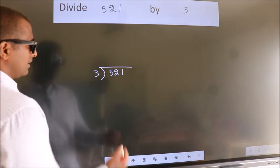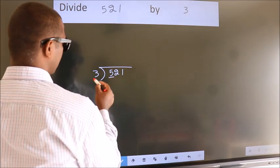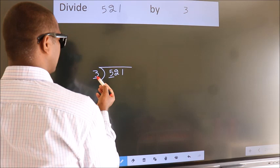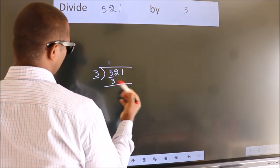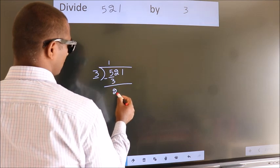Next, here we have 5, here 3. A number close to 5 in the 3 table is 3 times 1 equals 3. Now, we should subtract. We get 2.